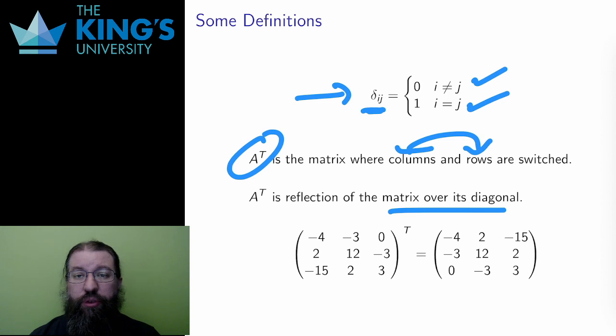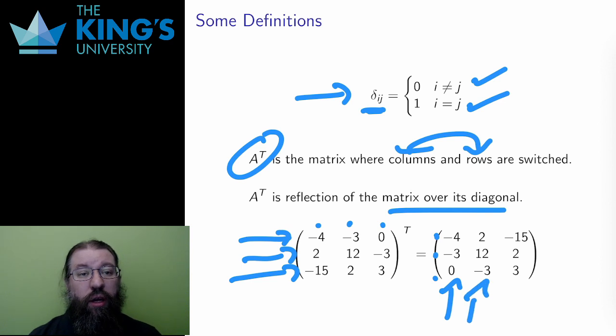In this matrix, the rows are -4, -3, 0, then 2, 12, -3, and -15, 2, 3. In the transpose, these become the columns. You can see that the first column is -4, -3, 0, and then so on for the second column and the third column.